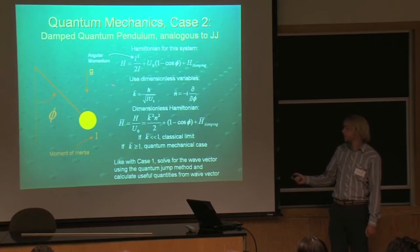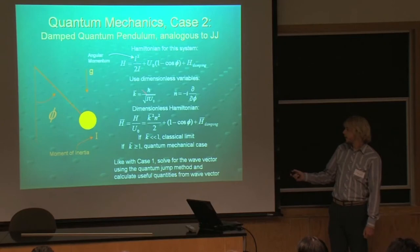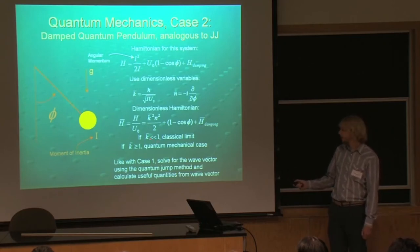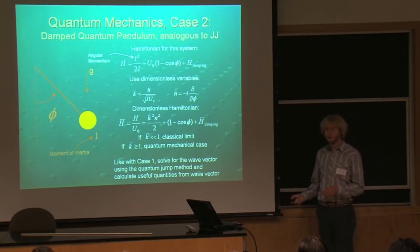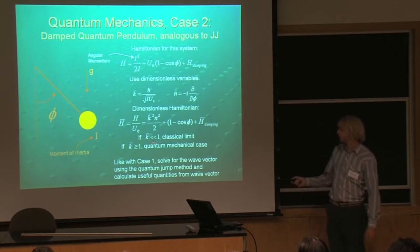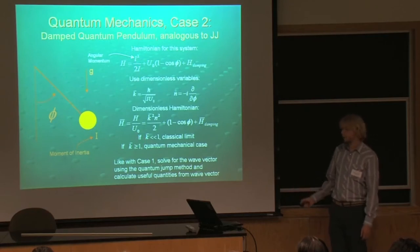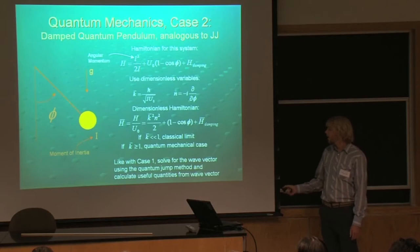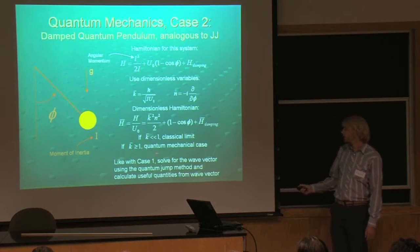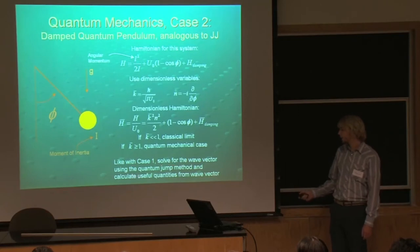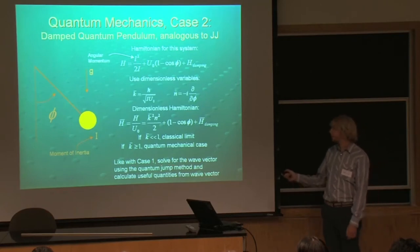Basically, as the pendulum gets bigger, this value K gets much smaller. As that value goes to zero, we have basically a classical large pendulum. As that value approaches one or larger, we start getting towards a more quantum mechanical case. Like before, we're going to solve with this Hamiltonian — we'll solve for the wave vector using the quantum jump method and then calculate the quantities we want from that.